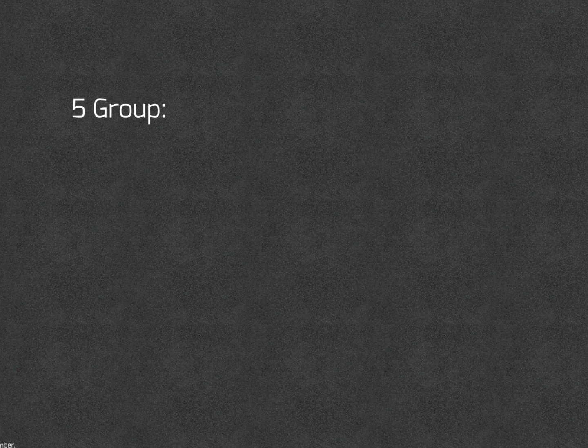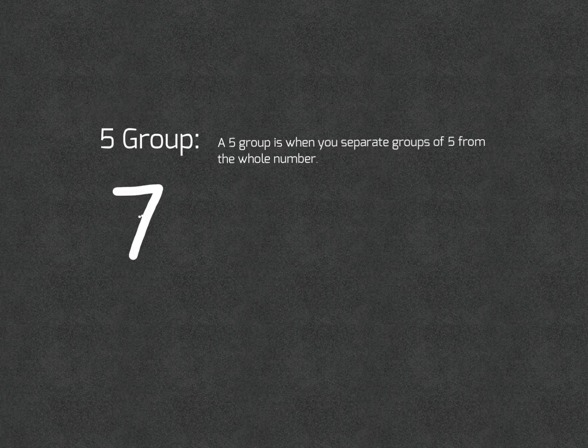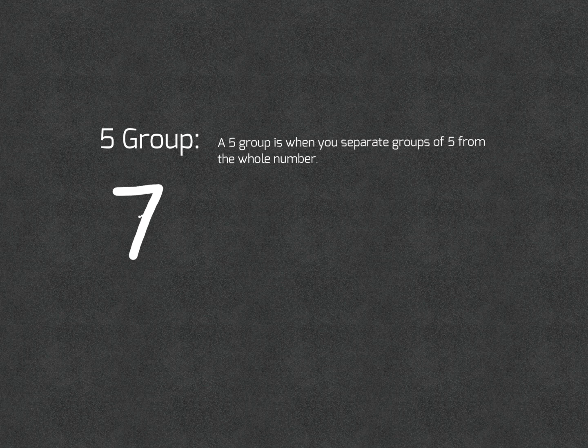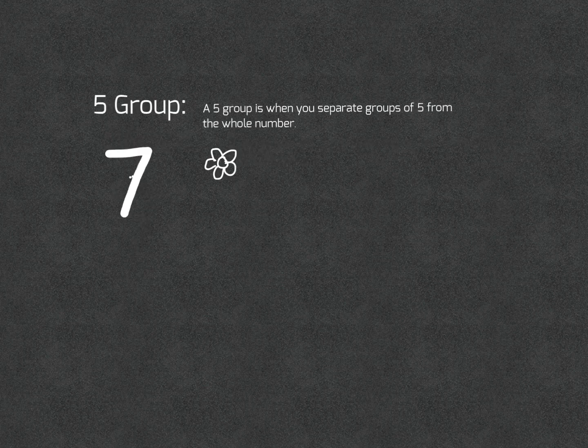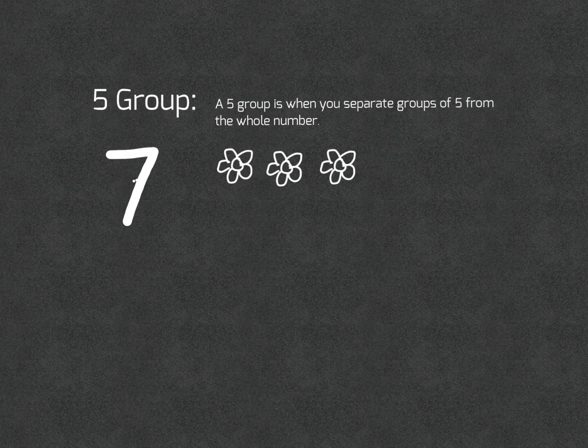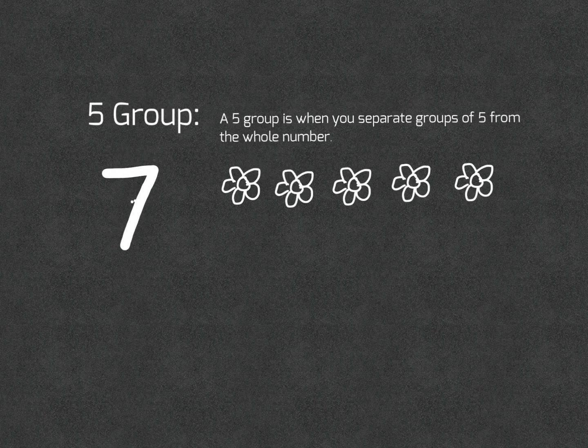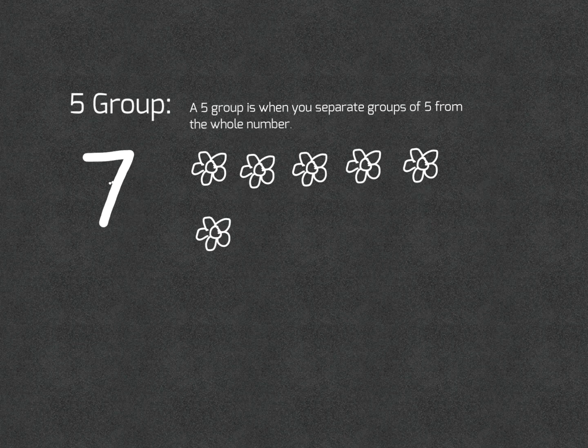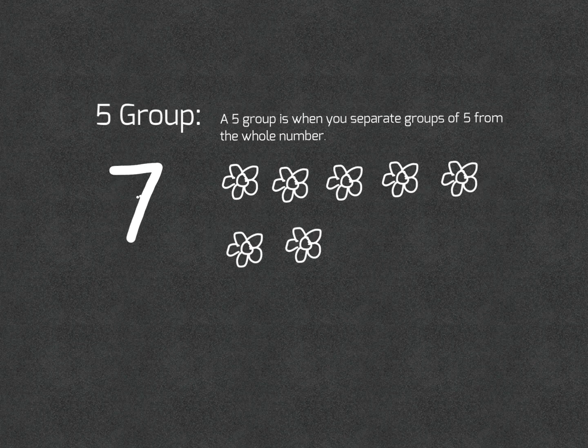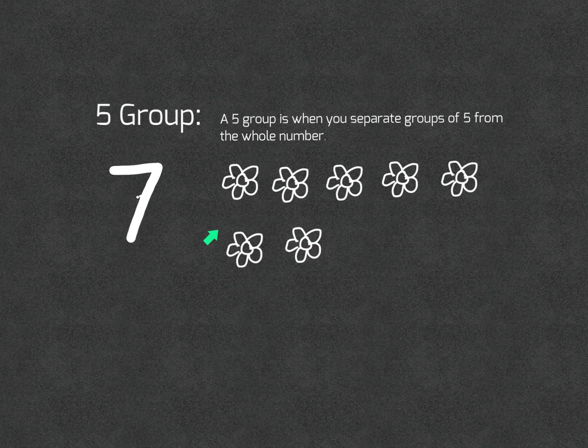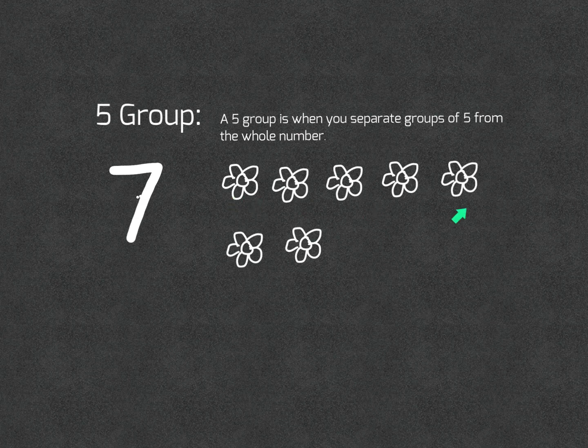Five group: A five group is when you separate groups of five from the whole number. For example, let's take the number seven. One, two, three, four, five, six, seven. We have one group of five and one group of two. Five plus two is seven.